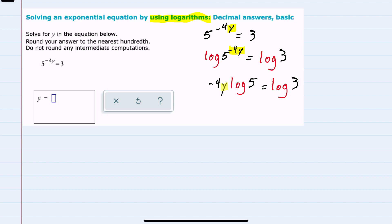I can solve for our variable y, since the negative 4 and the log 5 are being multiplied, by dividing both sides of this equation by the negative 4 and the log 5.